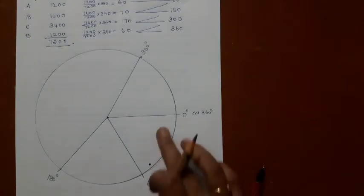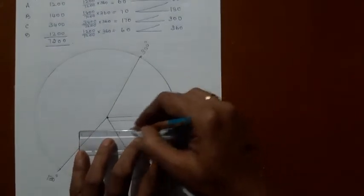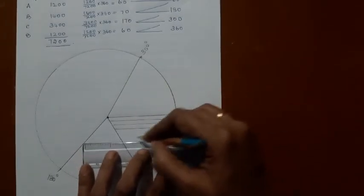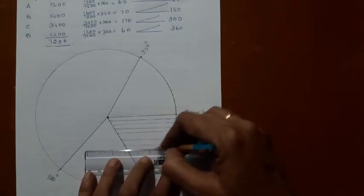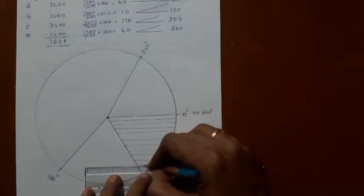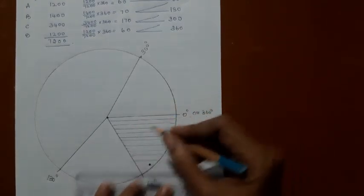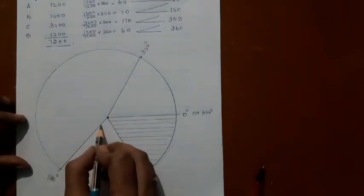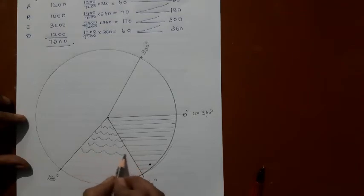Now from 0 to 60 degrees, it is A, so I have drawn horizontal lines here. And from 60 degrees to 130 degrees, it is B.